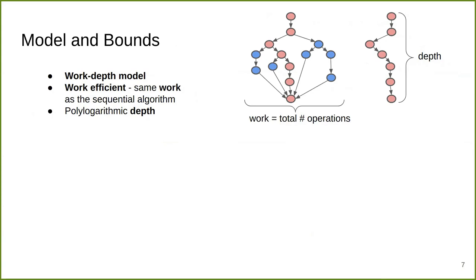Here's our theoretical model for parallel algorithms. We use the work and depth model, where we use a directed acyclic graph to represent an algorithm. Each node represents an operation, and each directed edge represents a dependency. If two operations have no dependency between them, they can be executed in parallel by a parallel scheduler. Work refers to the total number of operations, and depth refers to the length of the longest dependency chain. When designing our parallel algorithms, we aim for work efficiency — meaning the total work should be the same as the sequential algorithm — and also for polylogarithmic depth.